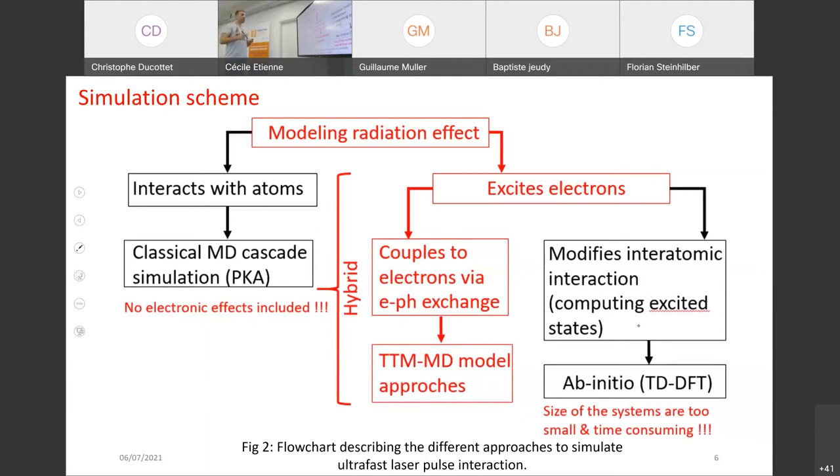Now, if you want to model radiation effects, you have mainly two different ways to do this. Either you use classical molecular dynamics with PKA, primary knocking atoms method. But this approach has a drawback, which is no electronic effects are included since it's purely classical. There is another approach where we can use Abinichu simulation with TDDFT to define excited states. But this method also has a drawback, which is the size and it's time consuming. Using Abinichu is nice, but the drawback is you cannot exceed some hundreds of atoms.